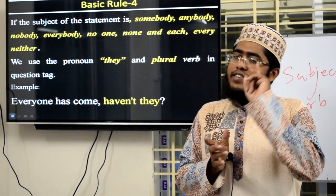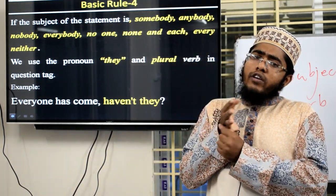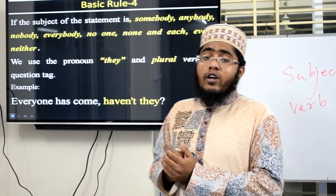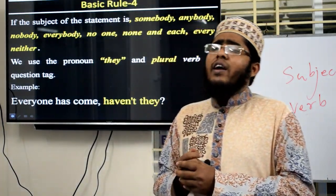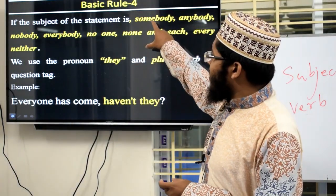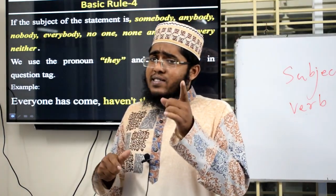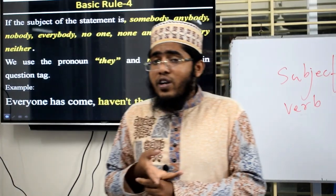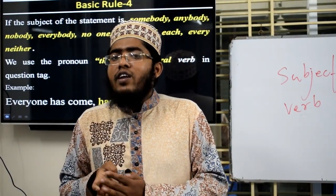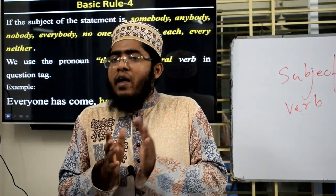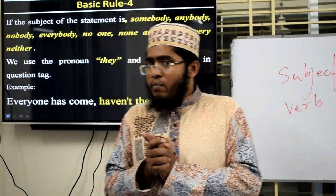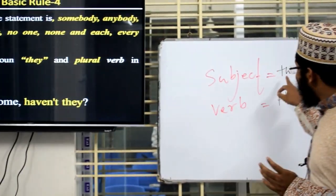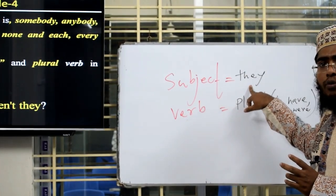Students, we have finished rules 1, 2, and 3. Now let's do basic rule number 4. This is a critical one. If a sentence starts with someone, somebody, no one, nobody, anyone, anybody, everyone, or everybody, then the subject in the tag question will always be 'they' and the verb will be plural. We have now learned basic rules 1 and 2.